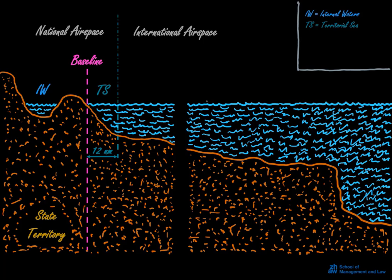The territorial sea also marks the outer limit of national airspace. The next zone that the coastal state can claim is the contiguous zone, extending to up to 24 nautical miles from the baseline. Here, the coastal state does not have full jurisdiction, but may enforce certain kinds of national law rules, in particular customs law, which for instance allows for law enforcement against smugglers.